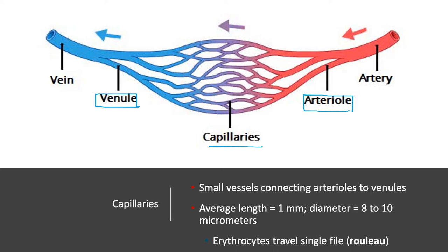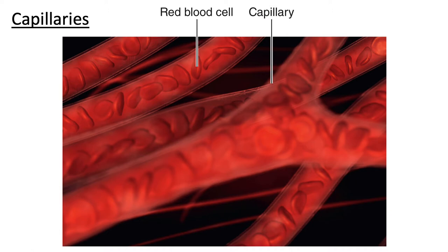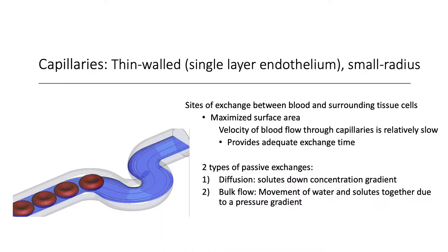The average length is about one millimeter, and they have a very small diameter — about the width of a red blood cell, or an erythrocyte. Because they're so narrow, the red blood cells have to move in single file, a term we call rouleaux. There are about 10 billion capillaries on average within the body. Recall that the wall of the capillary consists of a single endothelial layer sitting on a basement membrane. That thin wall and small diameter make these vessels optimal for exchange between the blood and the tissue fluid.